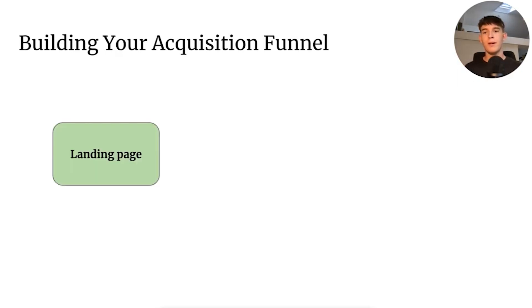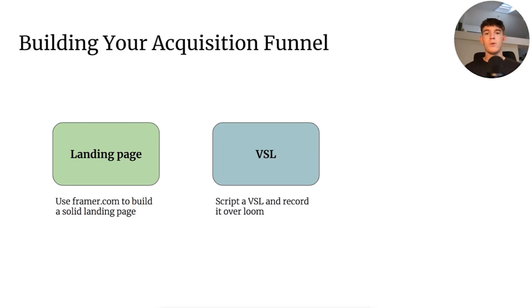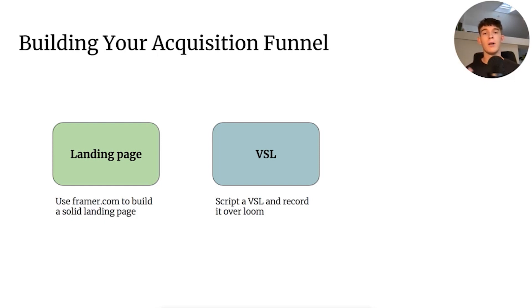This starts with a landing page. Build a simple landing page in something like Framer.com. This won't take you more than four hours and then you'll have something perfect that you can use for your agency or your business. Script a quick VSL and then record it over Loom like I'm doing right now. This video won't be more than two to five minutes long and it'll just explain what your offer is and how it can benefit your customers.